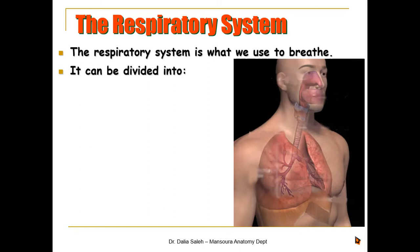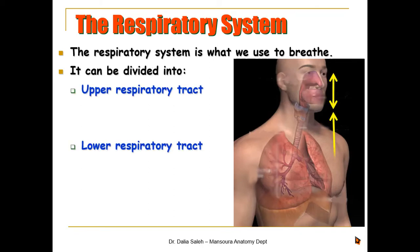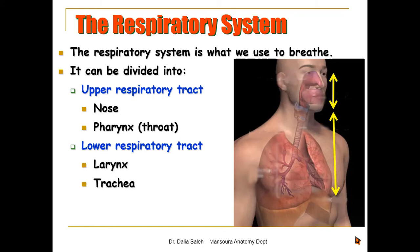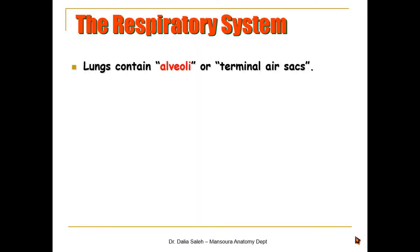The respiratory system is what we use to breathe. It can be divided into the upper respiratory tract and the lower respiratory tract. The upper respiratory tract includes the nose and the pharynx, or the throat, while the lower respiratory tract includes the larynx, the trachea, the bronchi, and the lungs. This is the anatomical classification of the respiratory system.